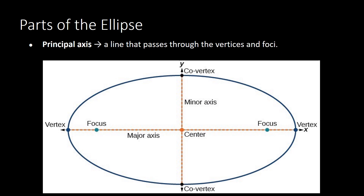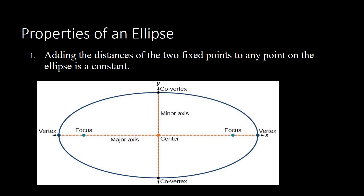The principal axis is a line that passes through the vertices and foci. This is essentially the same as the major axis.